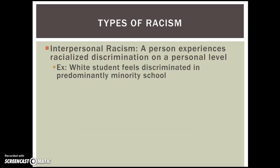When it comes to types of racism, interpersonal racism refers to a person's firsthand experience of racialized discrimination. Everybody can experience interpersonal racism, including whites. Whites can feel discriminated against, for example, when they're around predominantly minority people. A white student can be bullied. Hate crimes do happen against white people — not as often as they do against other minorities and religious minorities, but they do happen. The FBI actually keeps track of them.